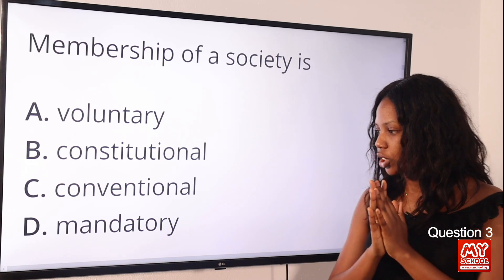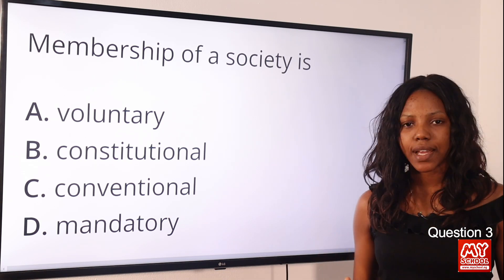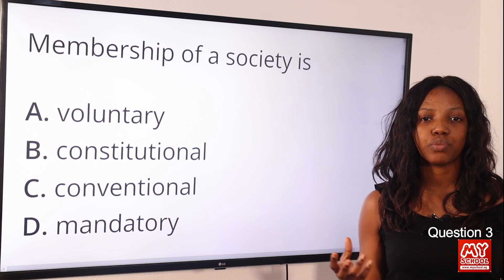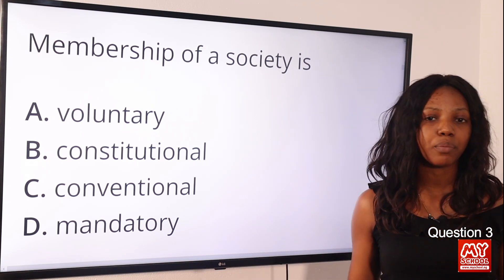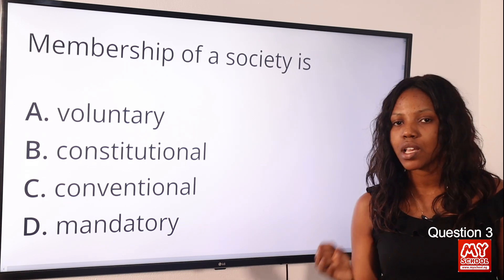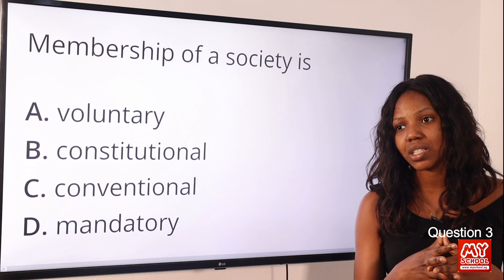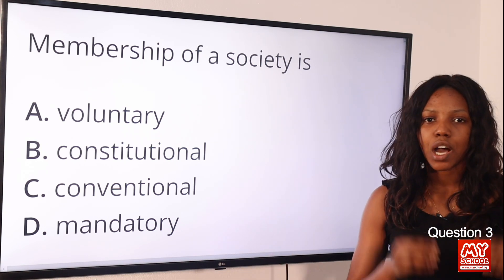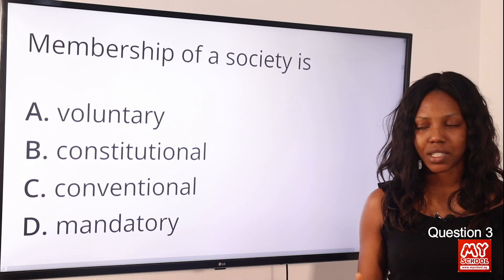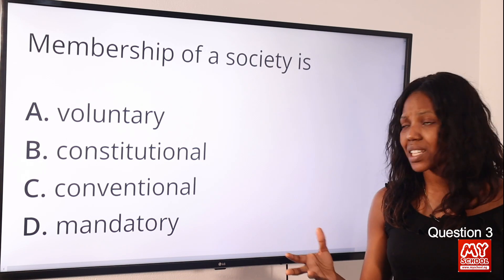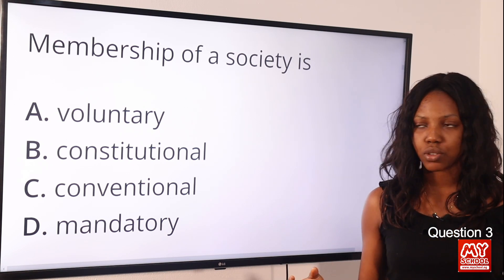Question 3: Membership of a society is — option A: voluntary; option B: constitutional; option C: conventional; option D: mandatory. The answer is option A, voluntary — being a member of a society is a choice. Society is a group of people who come together for a purpose; examples include family, clubs, fraternities, and professional organizations. Constitutional means it's written in the constitution; conventional means a general norm; mandatory means compulsory.